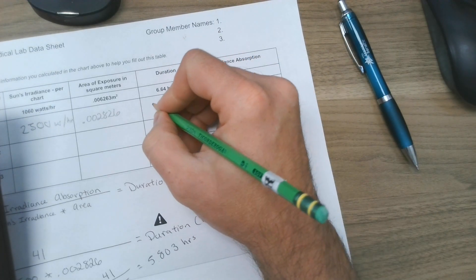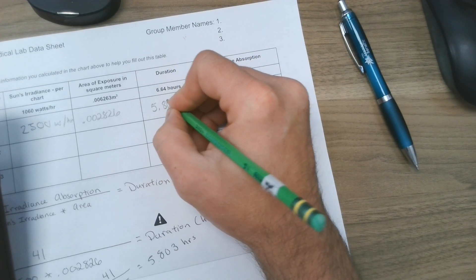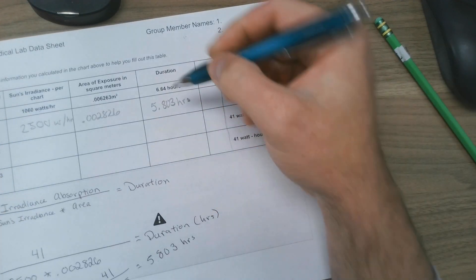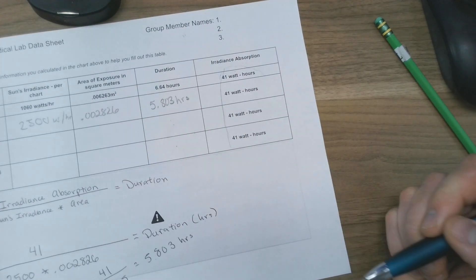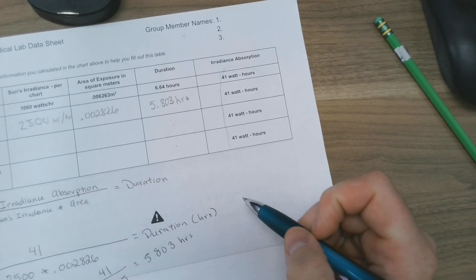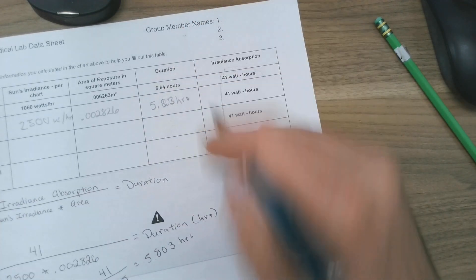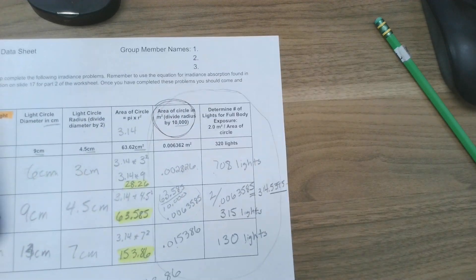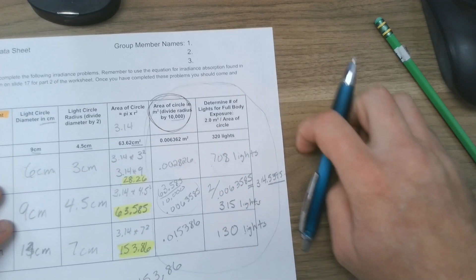So that would be my duration. Okay, so you're going to do that for these two trials as well. And then we'll be using the duration and we'll be using the number of lights later on in this lab. Okay, if you have any questions, come see me.